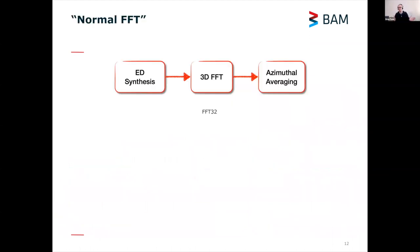The way it works is by three-dimensional Fourier transform. This is how you normally do it: you generate an electron density map, then 3D Fourier transform that and azimuthally average that, and there is your scattering pattern.